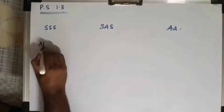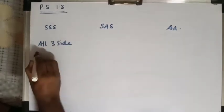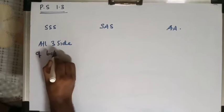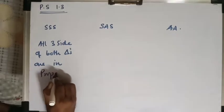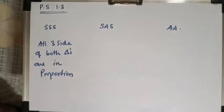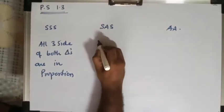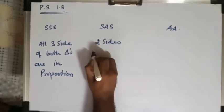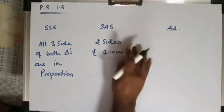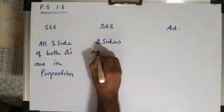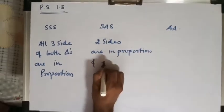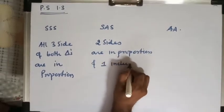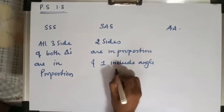In the SSS test, all three sides of both the triangles are in proportion. In the SAS test, two sides are in proportion and one included angle is congruent.